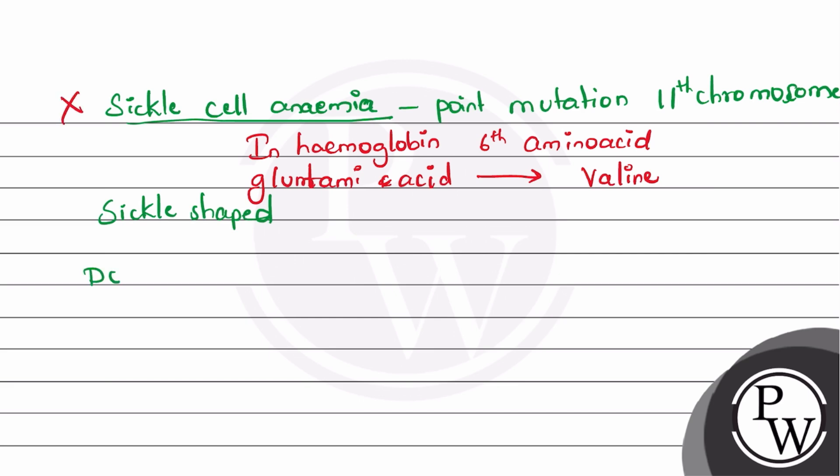The last one is Down syndrome. Down syndrome is called 21st trisomy because in the 21st chromosome, there is the addition of an extra chromosome.